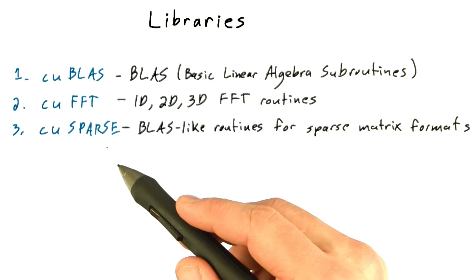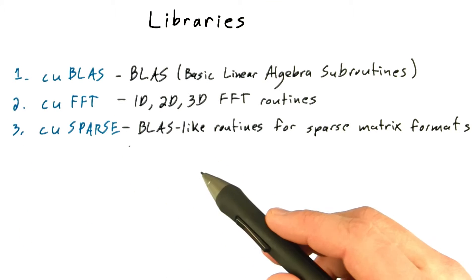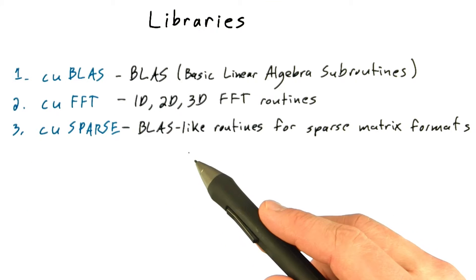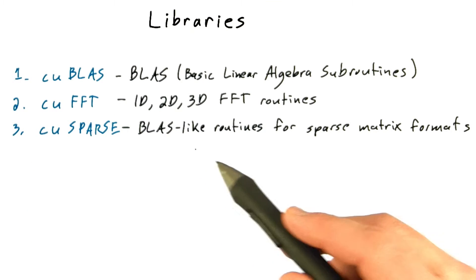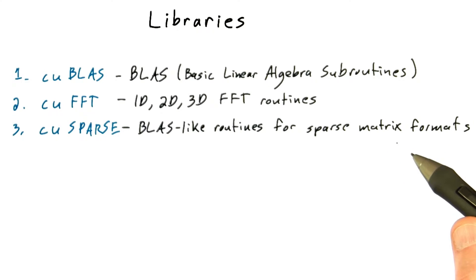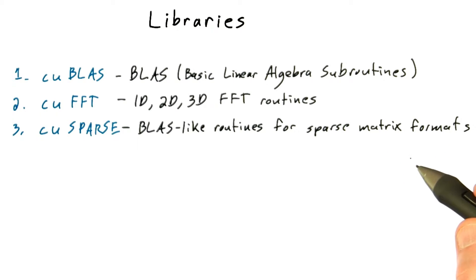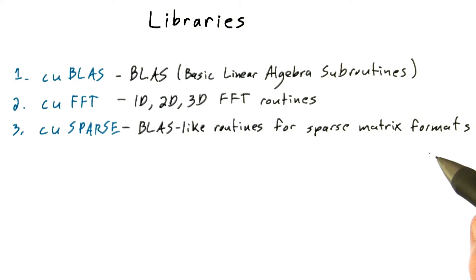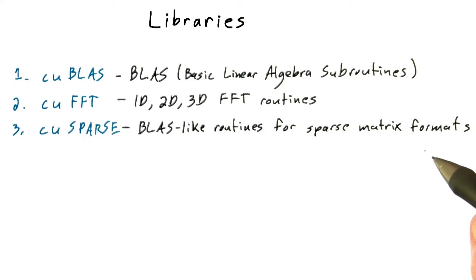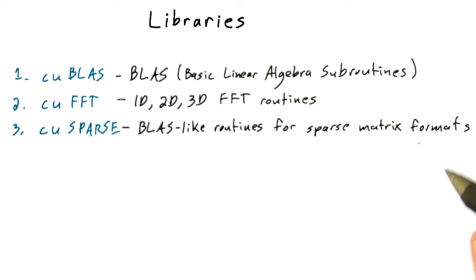CUSPARSE provides BLAS-like routines for doing linear algebra on sparse matrix formats. Sparse matrices are matrices that are mostly zero, and therefore stored in some sort of compressed format. CUSPARSE supports a variety of formats and includes higher-level routines like incomplete LU factorization.